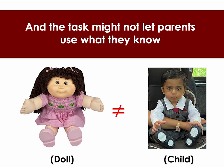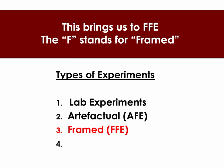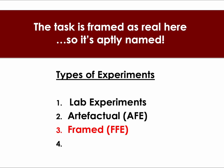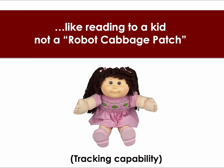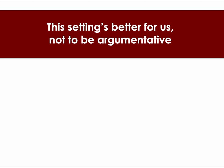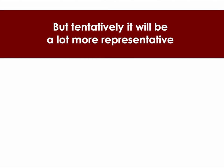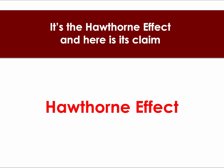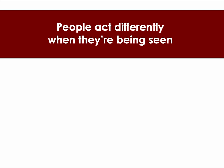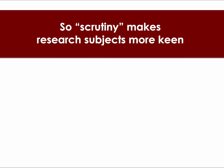Now a doll is not a child and the stakes are pretty low, and the task might not let the parents use what they know. This brings us to FFE — the F stands for framed — the task is framed as real here, so it's aptly named. The info, task, or stakes are more real — there's no catch — like reading to your kid, not a robot cabbage patch. This setting's better for us — not to be argumentative — but tentatively it will be a lot more representative. One remaining issue here has a special name: it's the Hawthorne effect, and here is its claim — people act differently when they're being seen, so scrutiny makes research subjects more keen.